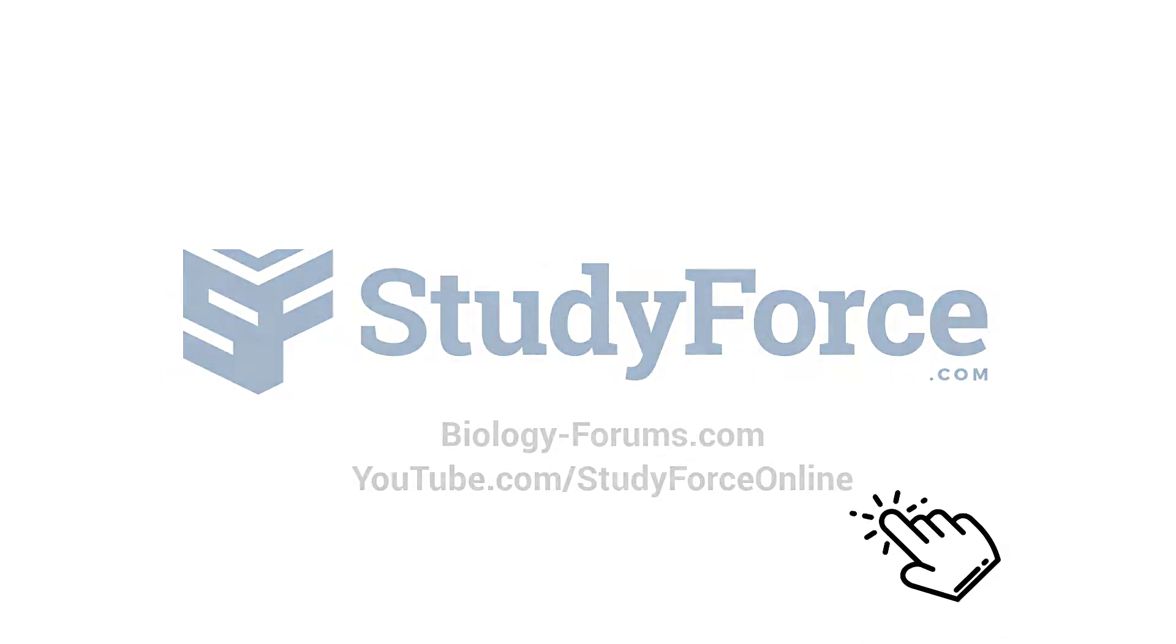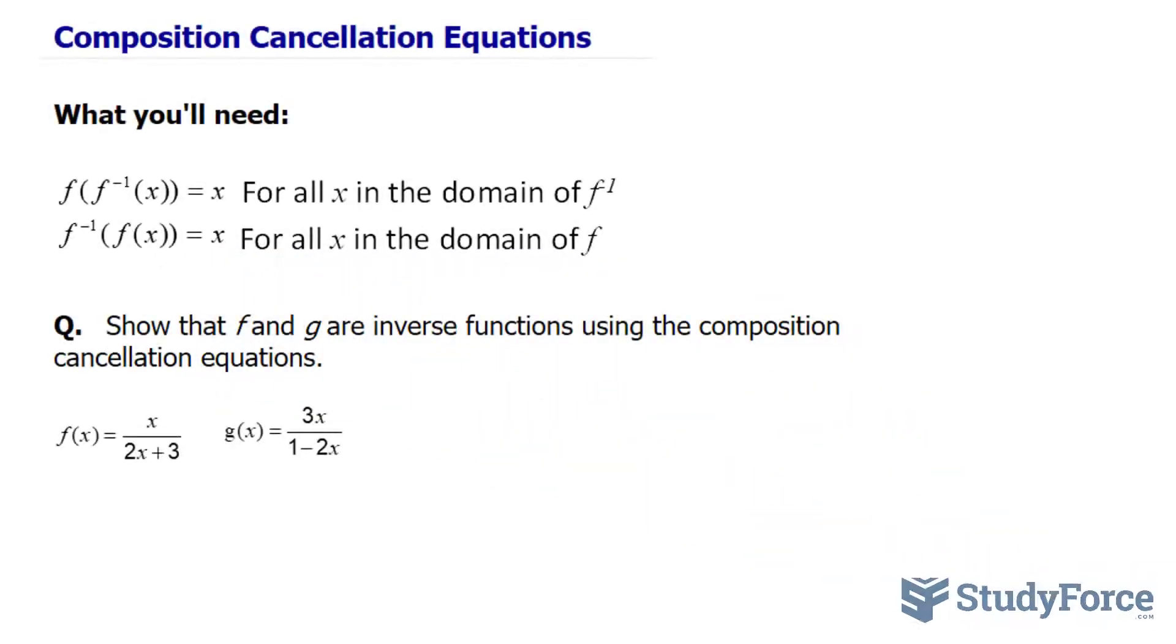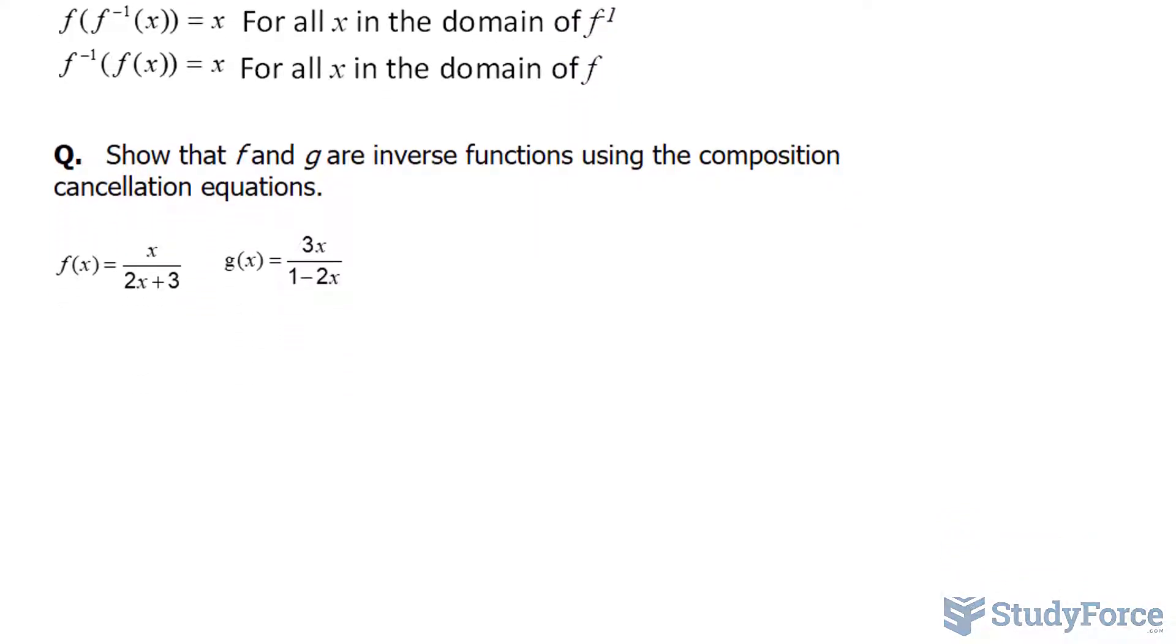In this lesson, we'll discuss composition cancellation equations. The idea behind this is that if you have the inverse of a function and you make the function a composite of the inverse, you should end up with x. And the same is true if you make the inverse a composite of the actual function. Those two things are defined right here. The question is asking us to show that f and g are inverse functions using the composition cancellation equations.